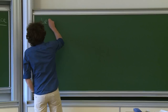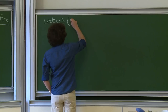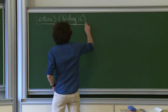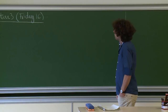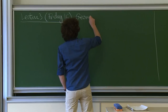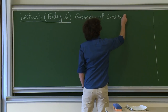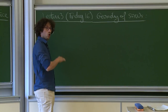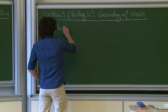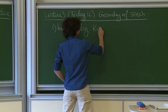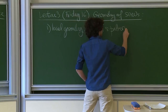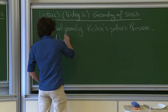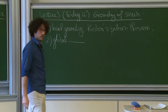Lecture three will be on Friday — Friday the 16th, so be careful, there's a slight change of plan, it's not every Tuesday. On Friday we'll study the geometry of self-avoiding walks: how do they look typically? There will be two main theorems. First, local geometry: how do they look locally? Second, global geometry, where we'll prove they are sub-ballistic.